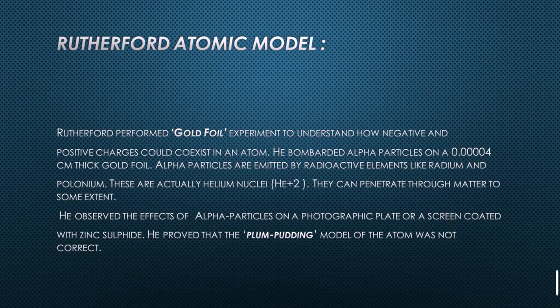According to the plum pudding theory, the central part is positively charged and surrounded by negatively charged ions. Rutherford took a gold foil with a thickness of 0.004 cm and used alpha particles to pass through this gold foil. He wanted to see whether the discoveries about the plum pudding theory were correct or not.